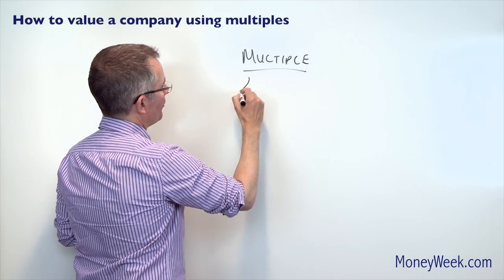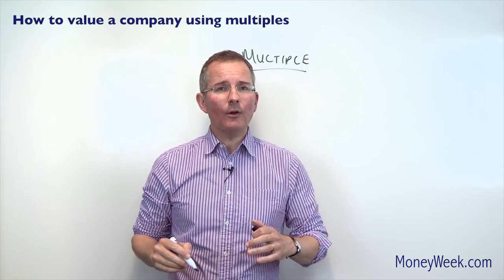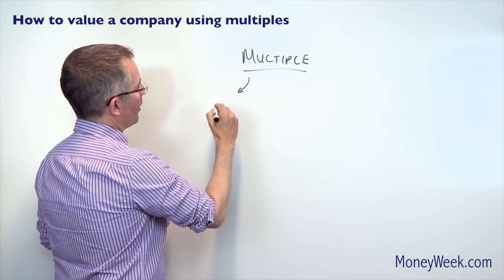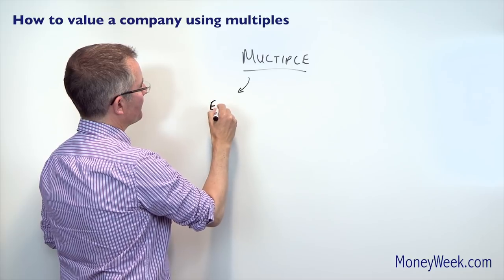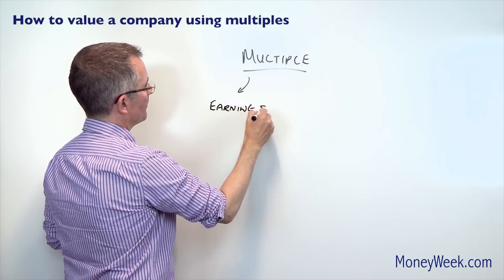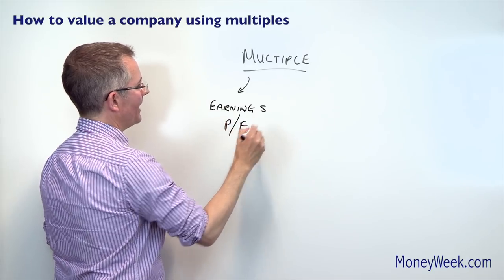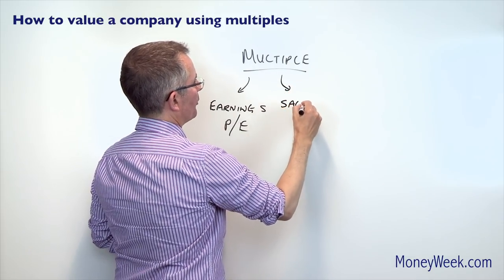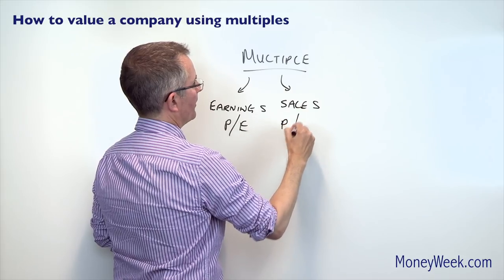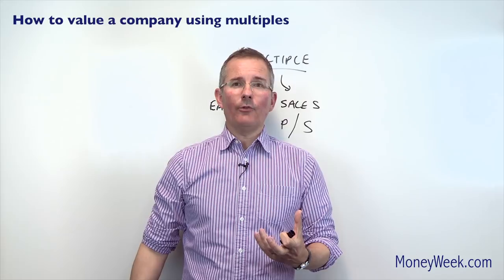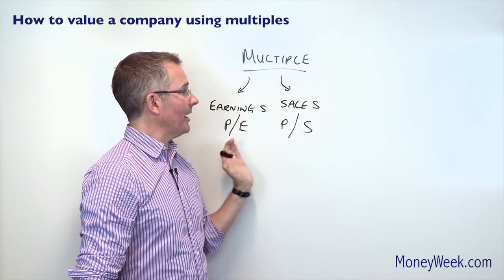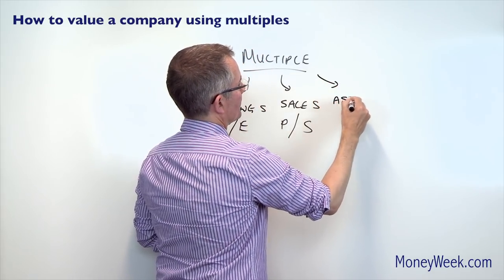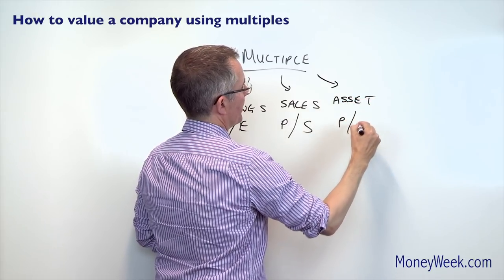If you're valuing a company using a multiple, you've got earnings-based multiples — the classic example being the old-fashioned P/E ratio. Then you've got sales-based multiples, like the price-to-sales ratio. Do take a look at my other ratio videos if you're unsure about some of this. And then you've got what I call asset-driven multiples, like the price-to-book ratio.